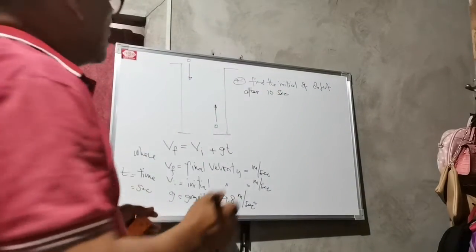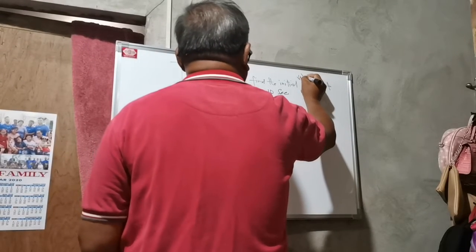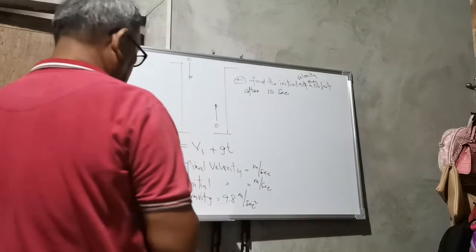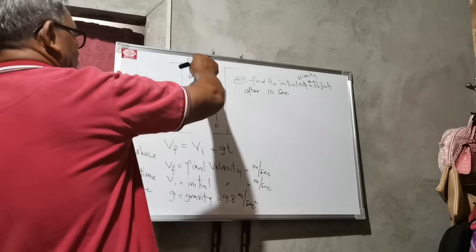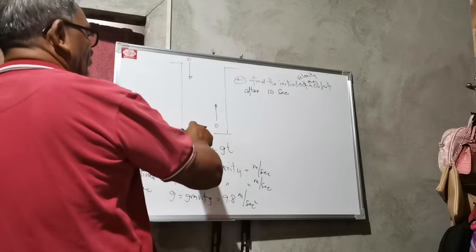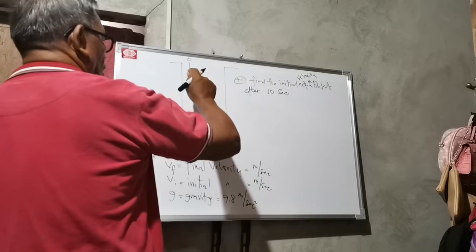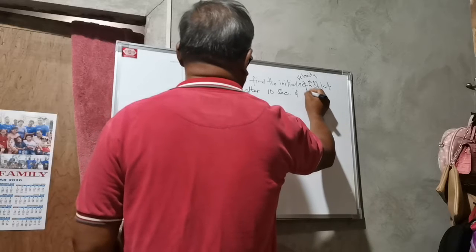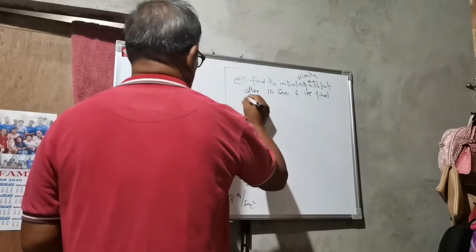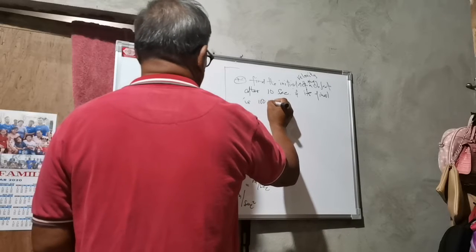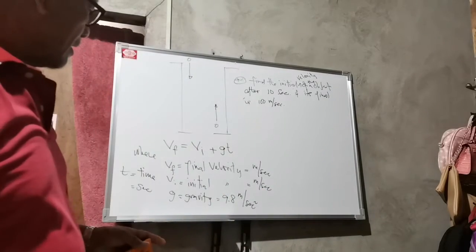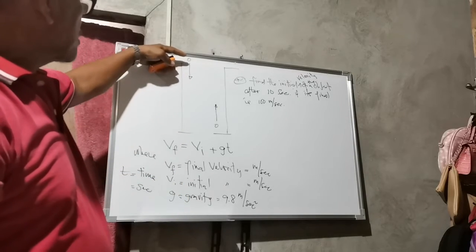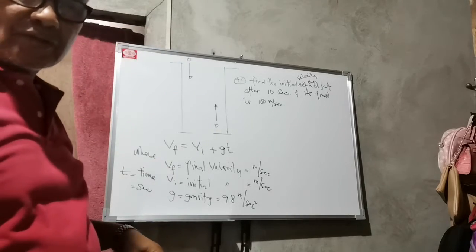Find the initial velocity of the object after 10 seconds. That means, after 10 seconds, what is the initial velocity of the object being dropped downward? If its final velocity is 100 meters per second, what is being asked is the initial velocity — meaning the velocity at the start when the object begins falling down.